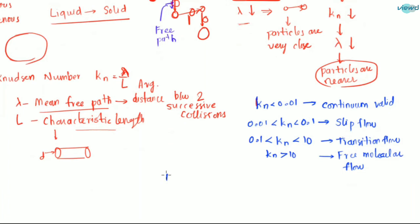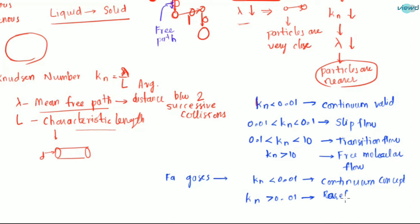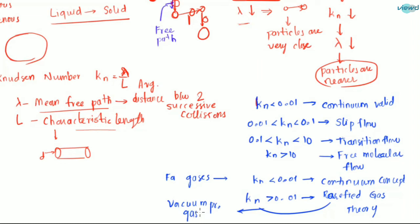Also for gases, if the Knudsen number is less than 0.01, we use the continuum concept. If the Knudsen number is greater than 0.01 for gases, we use rarefied gas theory. Rarefied means vacuum pressure gases — rarefied gases are gases which are at vacuum pressure. That's it for continuum.